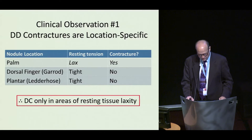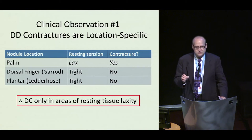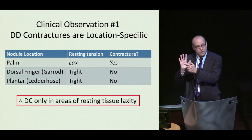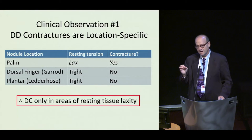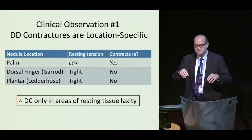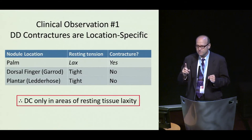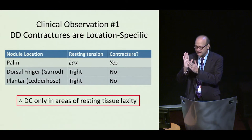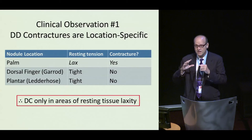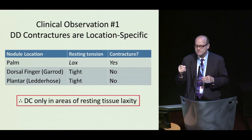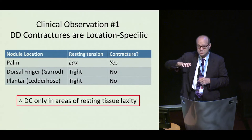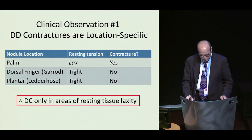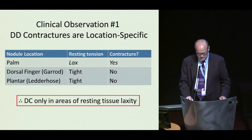There are three clinical observations which clearly support the passive contraction model. First is that Dupuytren contractures are location-specific. People develop Dupuytren nodules in three locations: in the palm, in the back of the fingers, and in the plantar fascia, for Ledderhose disease. The histology, myofibroblasts, and biology are the same in all three, but only the palm regularly develops contracture — the only area where tissues rest in relative laxity. The dorsal finger and plantar fascia rest at relative tension.